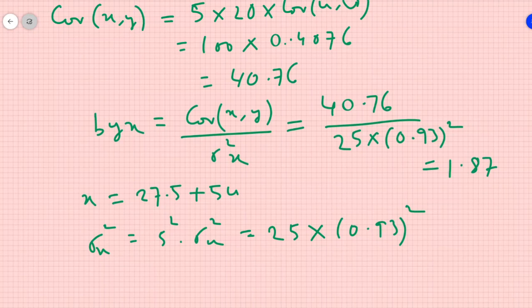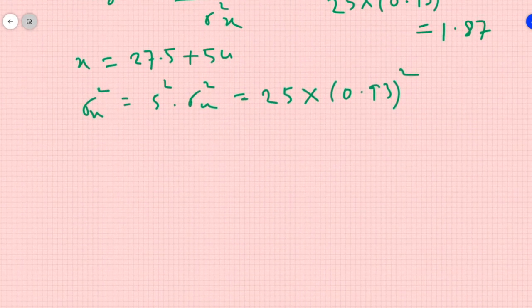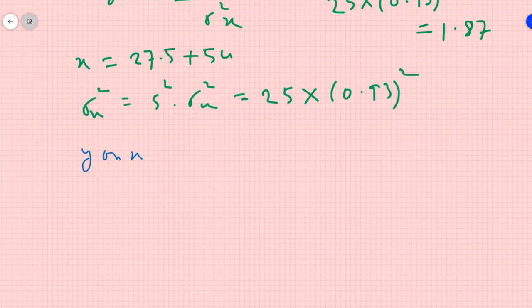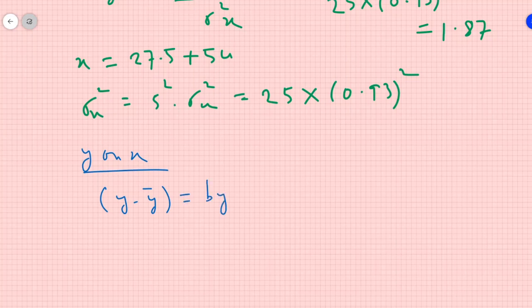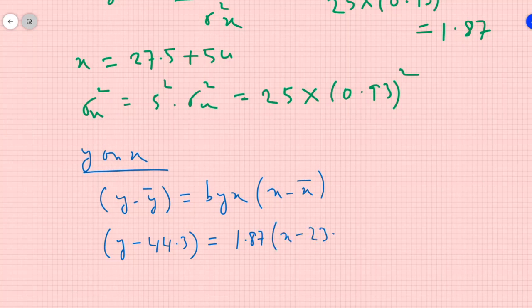So regression line y on x would be y minus y bar equals to byx into x minus x bar. Or y minus 44.3 equals 1.87 into x minus 23.8. If we will solve this, we will get y equals 1.87x minus 0.21. This is y on x.